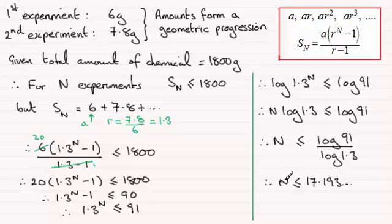Now we want the biggest value that N can be, the max N. It has to be an integer and it has to be less than or equal to this number. So maximum value has got to be 17. She would need to do 17 experiments.